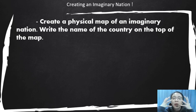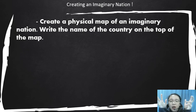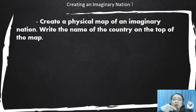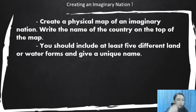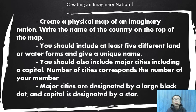To summarize: you need to create a physical map of an imaginary nation. Draw your own map with your own country name in a unique way. Include different land and water forms with unique names, major cities with one capital, and the number of people who can live there. Major cities use a black dot, and the capital is marked with a star.